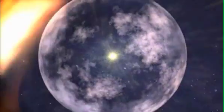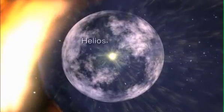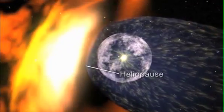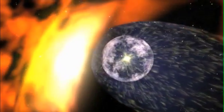The solar wind pushes out against this galactic wind, forming a bubble called the heliosphere. The outer boundary is called the heliopause and is blown into a teardrop shape by the galactic wind.